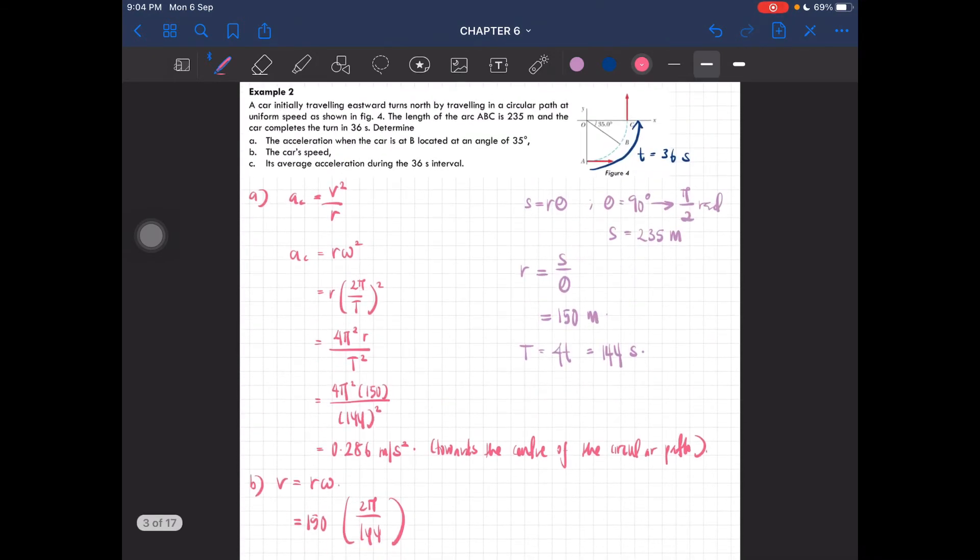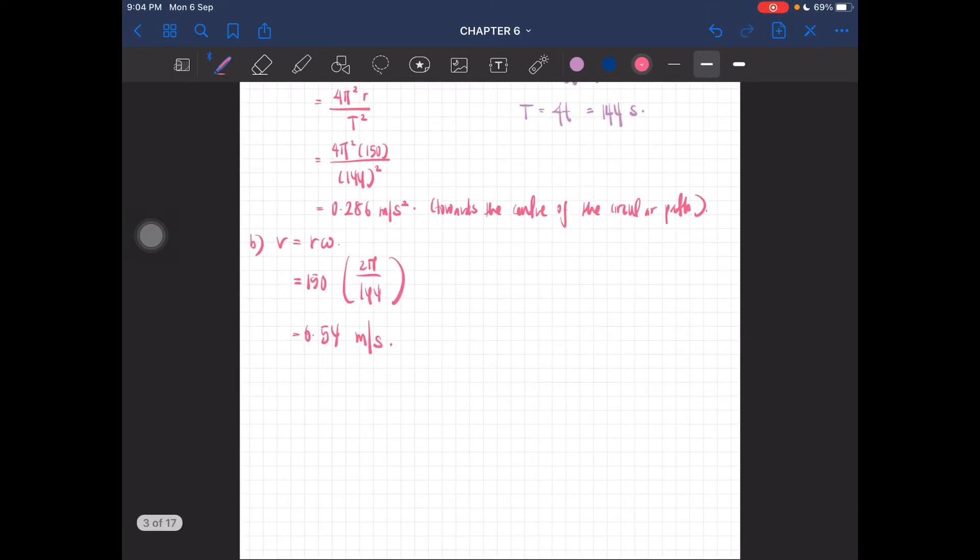Now we have to find the average acceleration during the 36-second interval. We know that the average acceleration is equal to Δv/Δt, so we have to find the change in velocity.